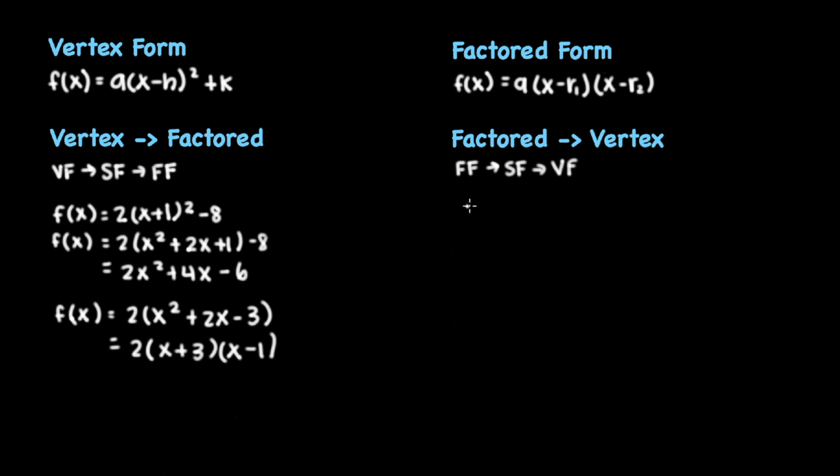For example, in the function f(x) = 2(x + 3)(x - 1), you can first multiply all the factors together to get to standard form. That will give us 2(x² + 2x - 3), which will give us 2x² + 4x - 6.